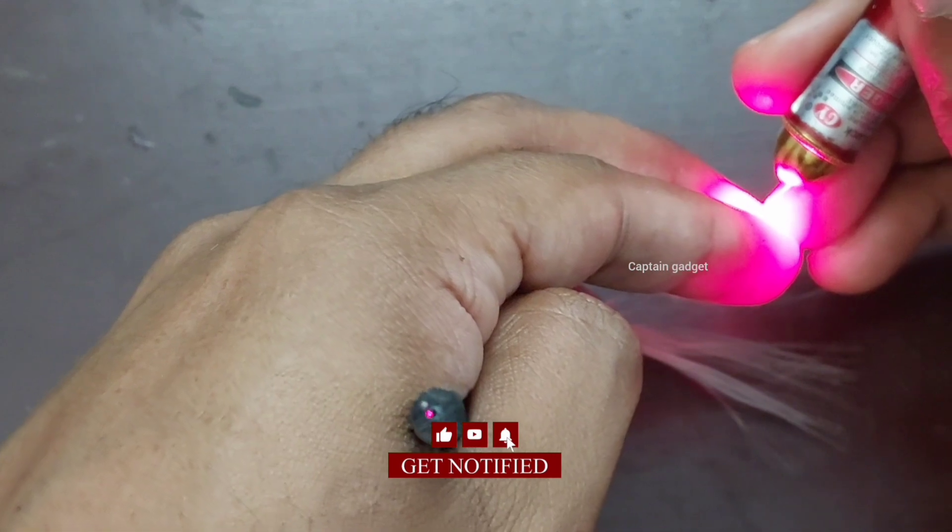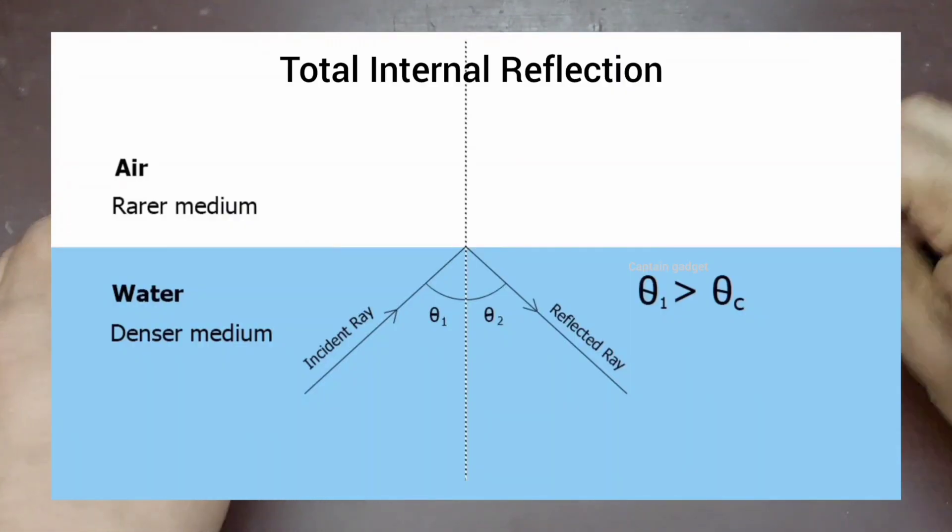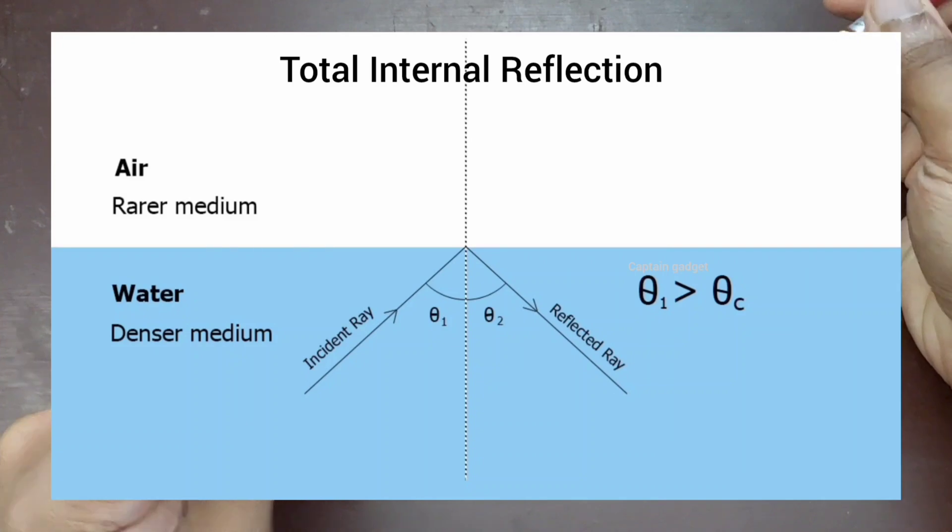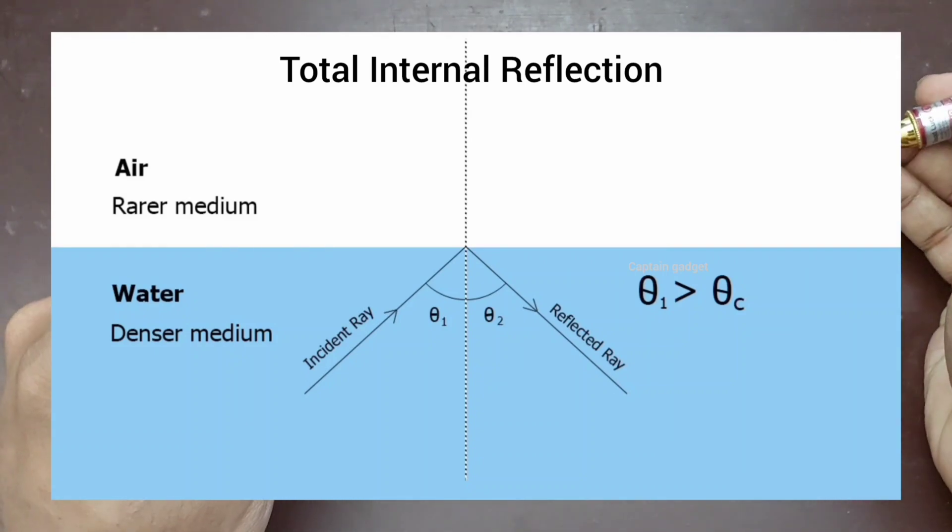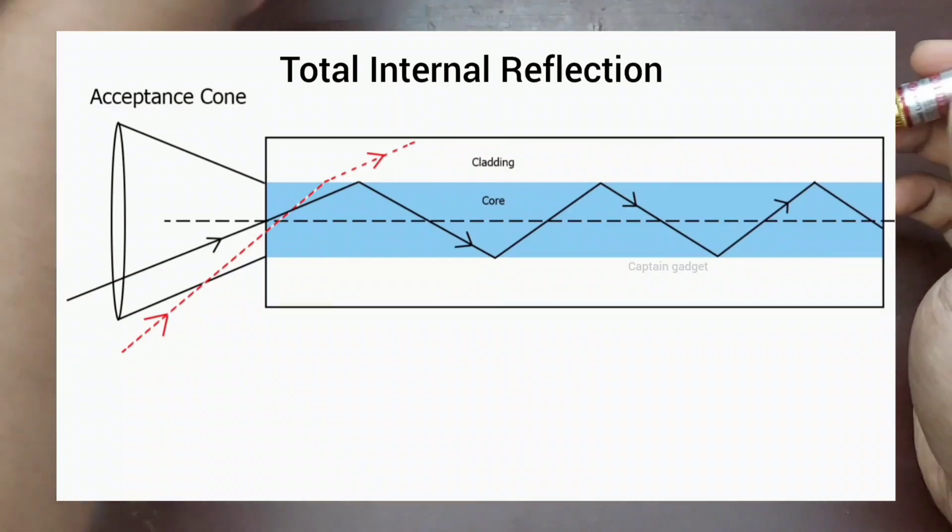The optic fiber cable works by total internal reflection. Total internal reflection is when light travels from a denser medium to a rarer medium. If the incident angle is more than the critical angle, the light will reflect back to the same medium. The total internal reflection continues inside the fiber like this.